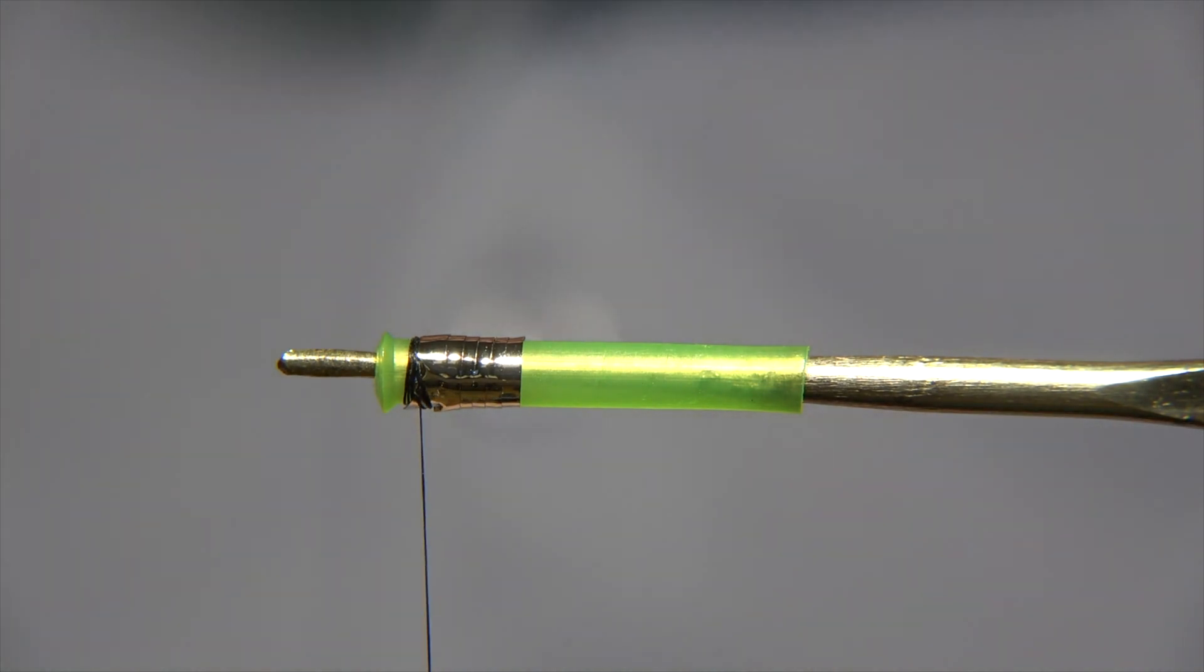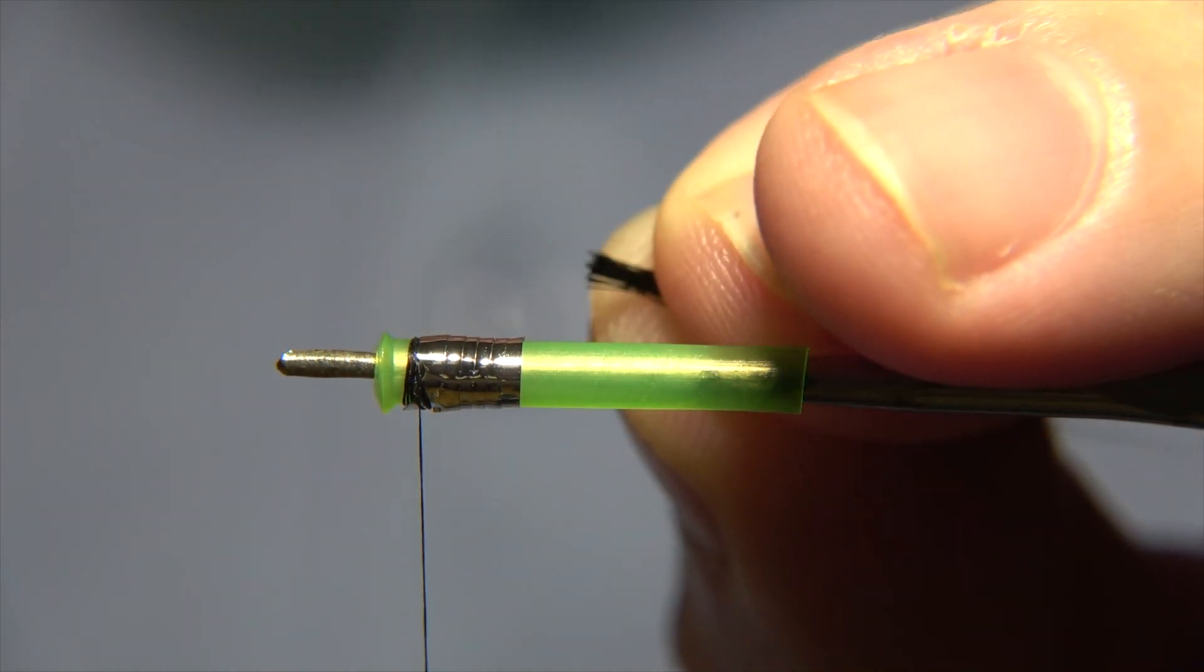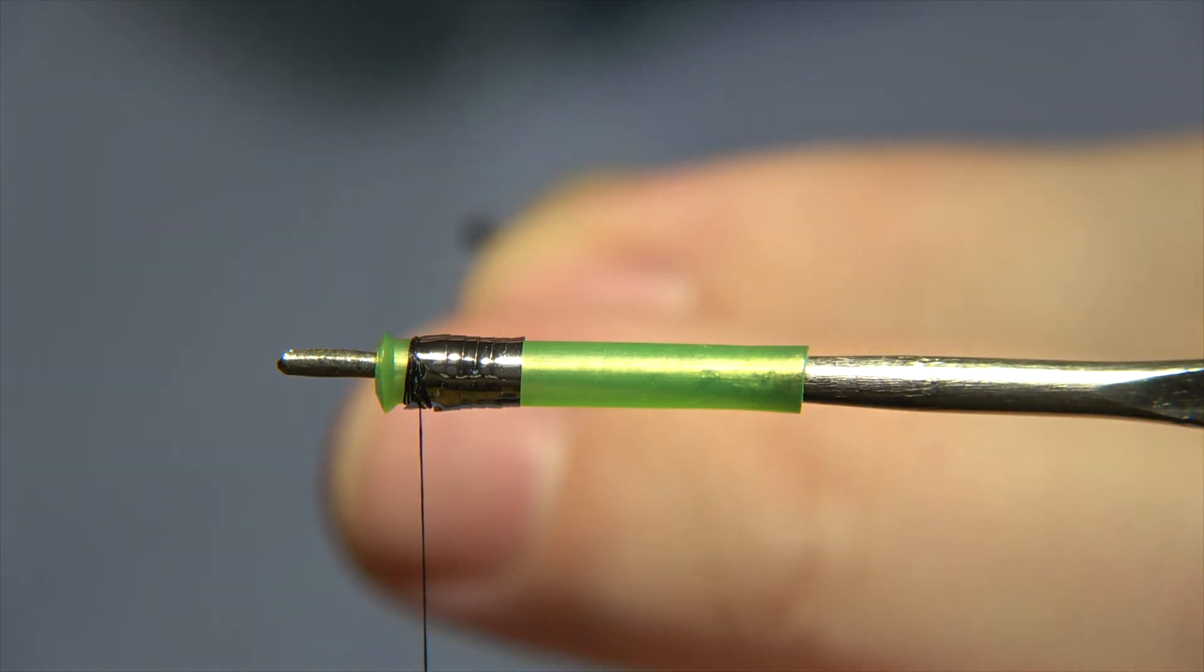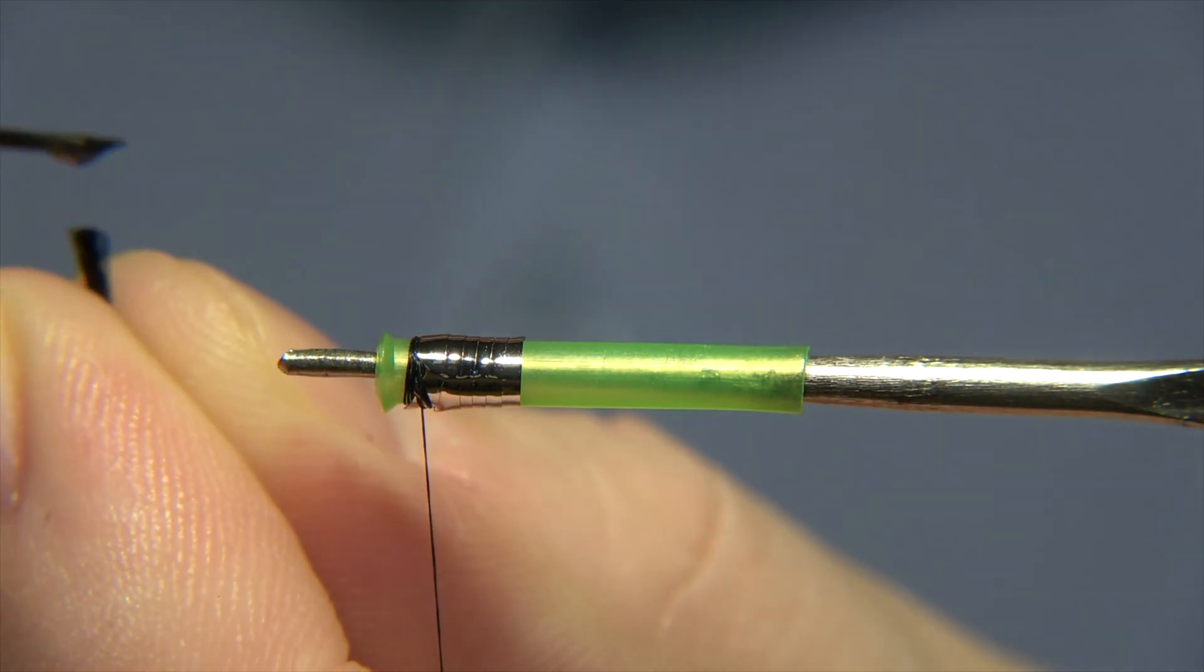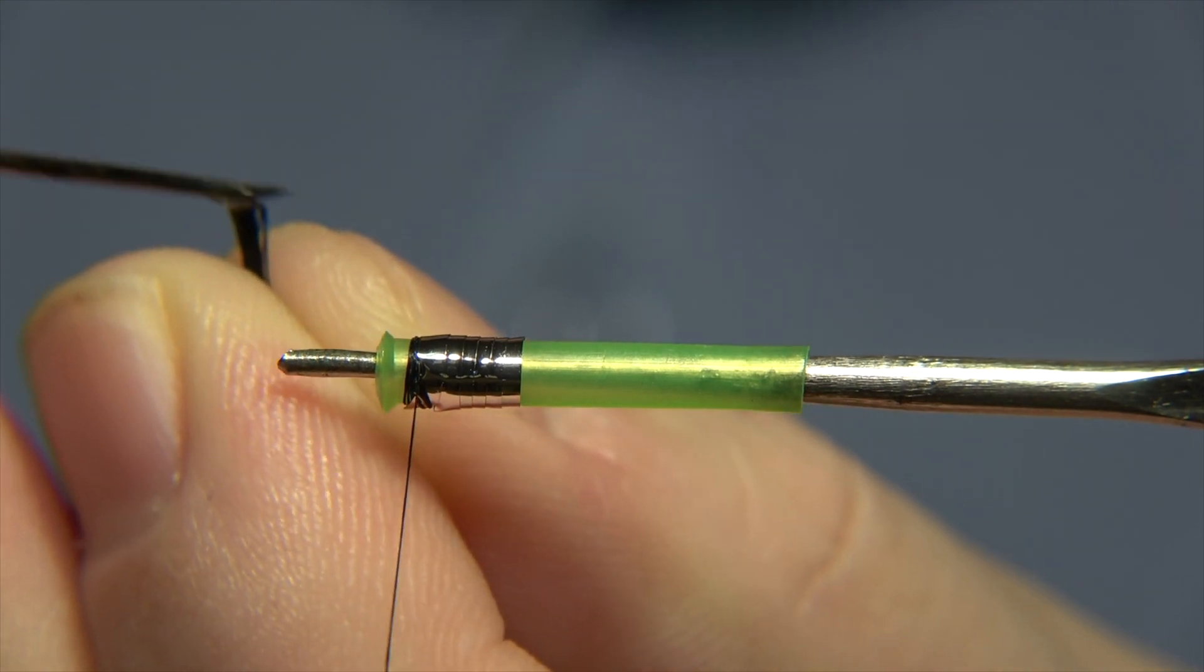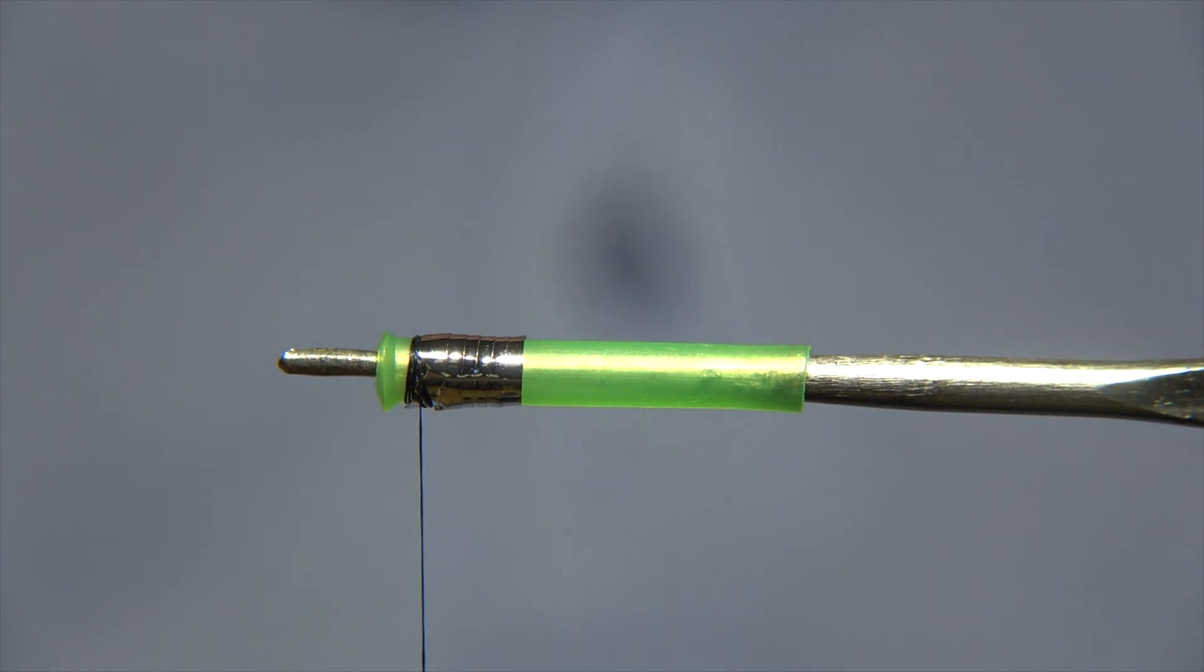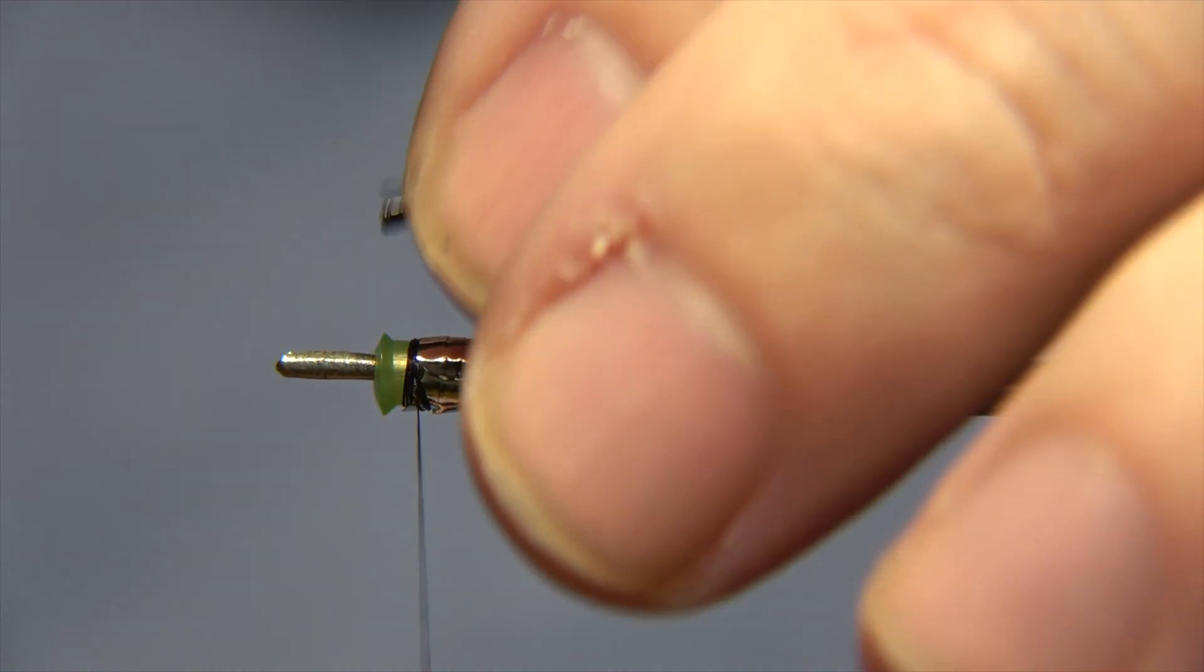So we need to trim down the wing to the correct length. I've done that and before we go on I'm gonna place a little head cement, just varnish on the end of the squirrel here, simply to keep it in place.